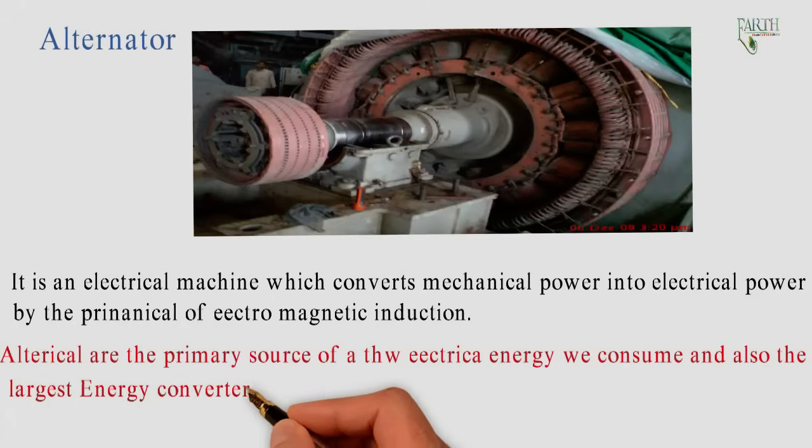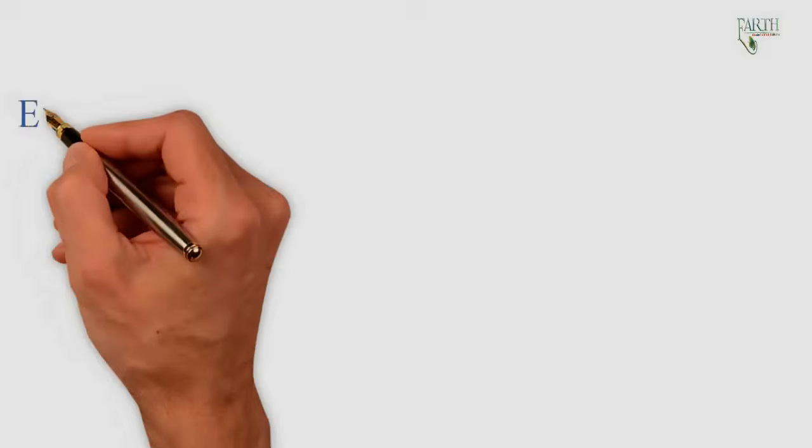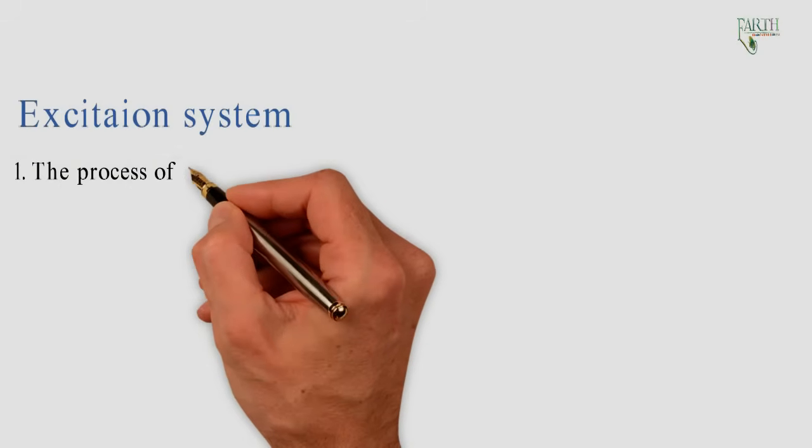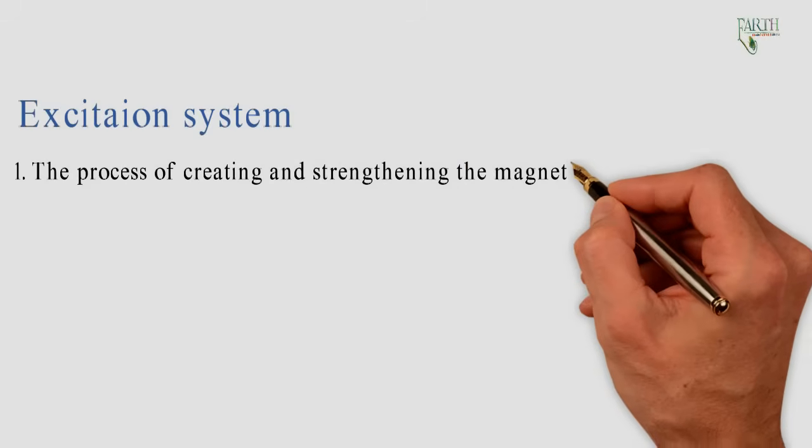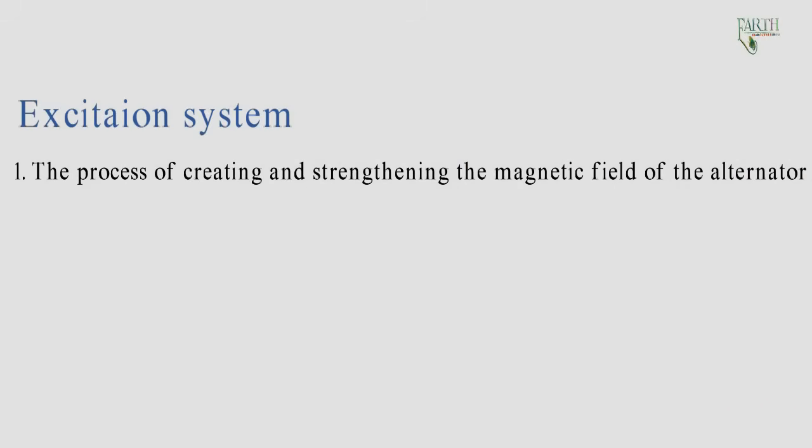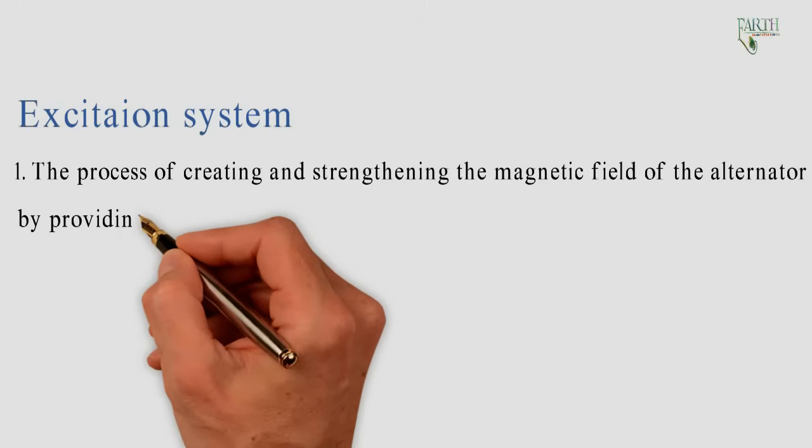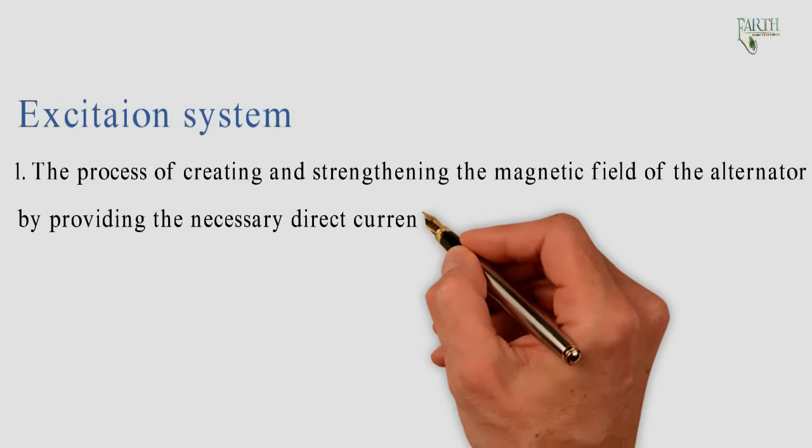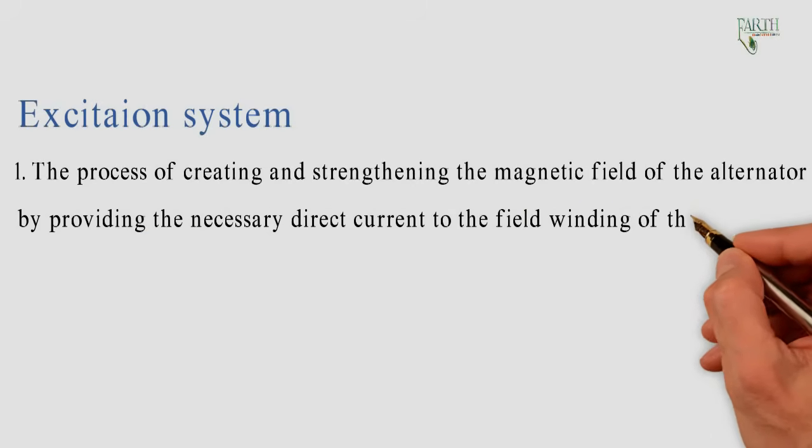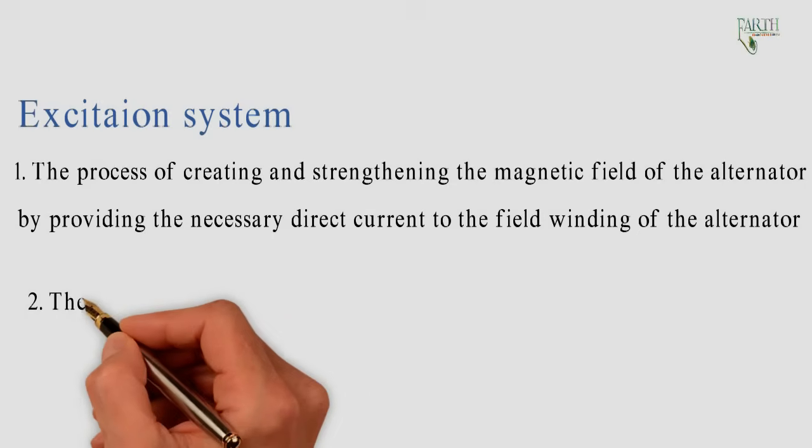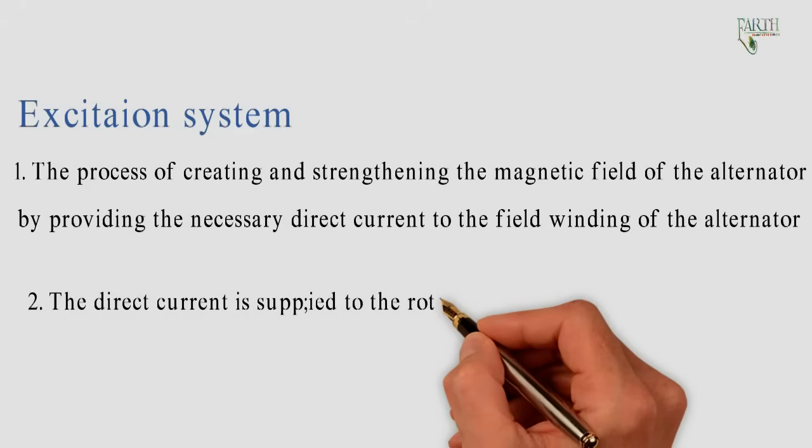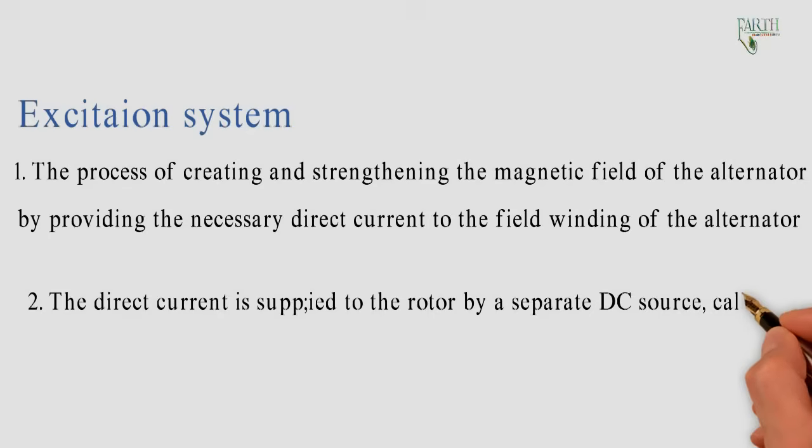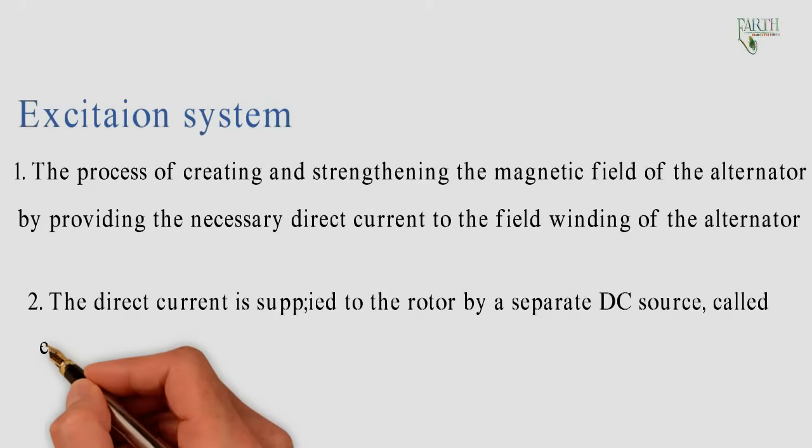Excitation system: 1. The process of creating and strengthening the magnetic field of the alternator by providing the necessary direct current to the field winding of the alternator. 2. The direct current is supplied to the rotor by a separate DC source called exciter.